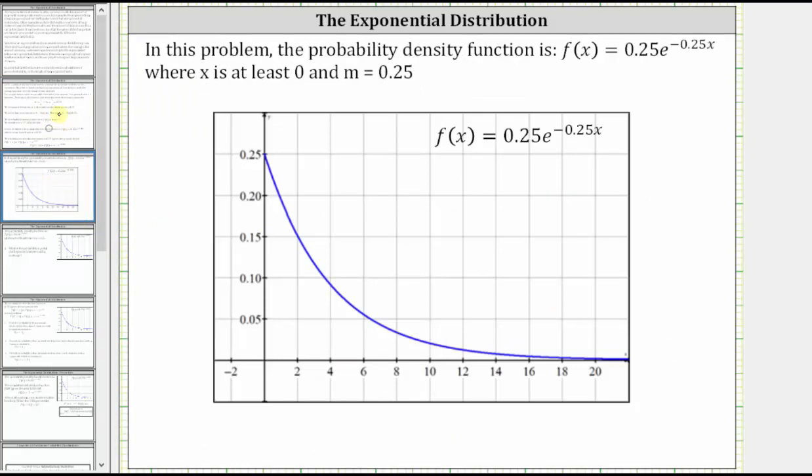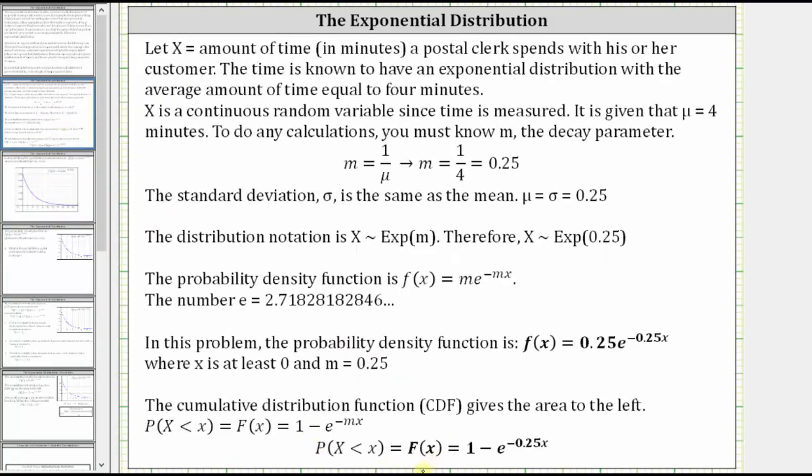And the cumulative distribution function is F(x) = 1 - e^(-0.25x), which gives the area to the left of x.